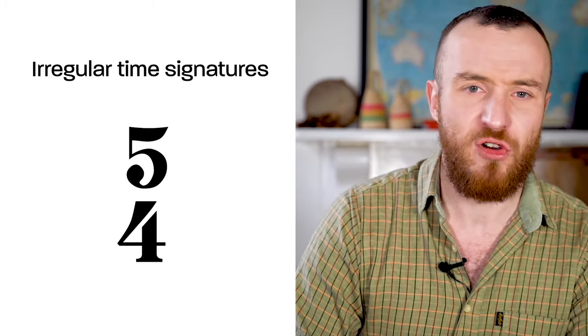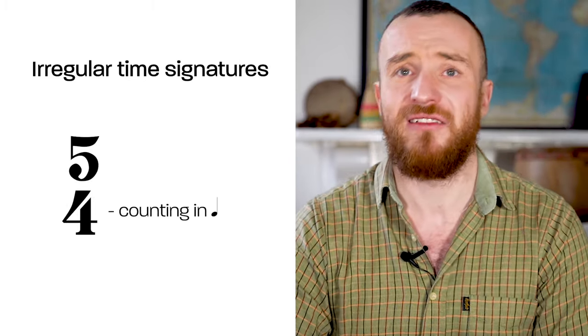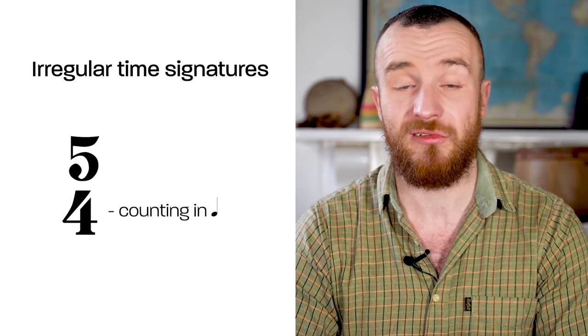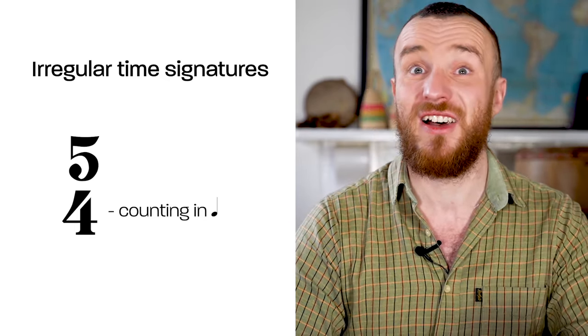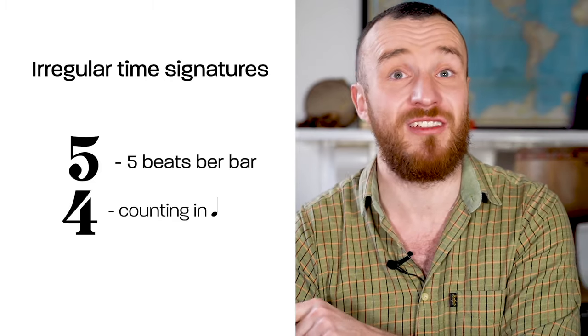What about five four, the same formula? Four tells us that we're counting in crotchets or quarter notes, and the five tells us that we have five of them. So five crotchets in every bar.